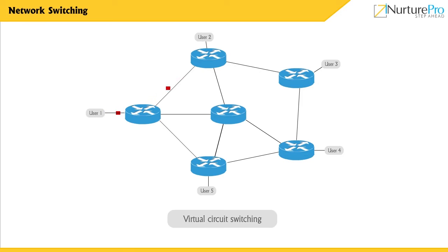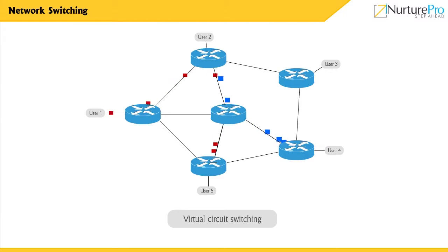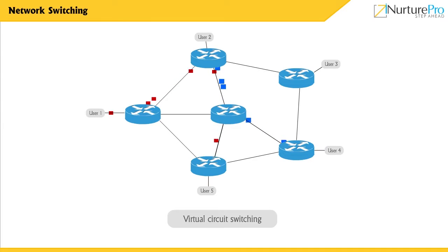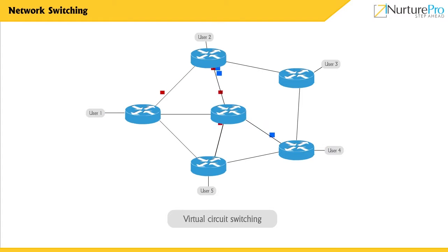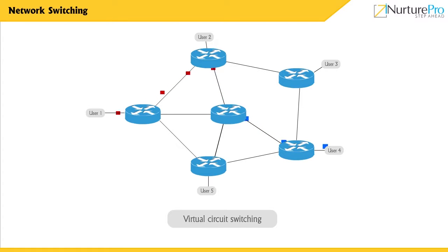The packets are queued while travelling through the network nodes, which causes variable delay and throughput. Virtual circuit switching does not use the host to make a routing decision for each packet, in order to save time and processing cost. To increase the packet's accuracy and to avoid packet duplication, it makes the routing decision only once while establishing the virtual circuit.